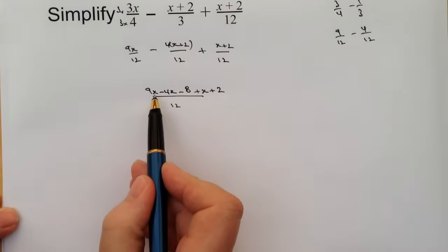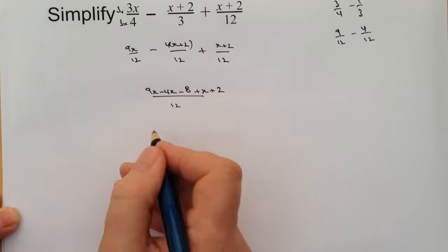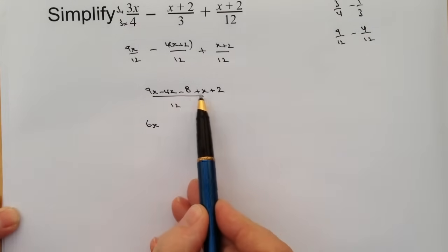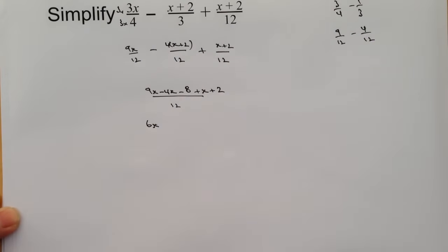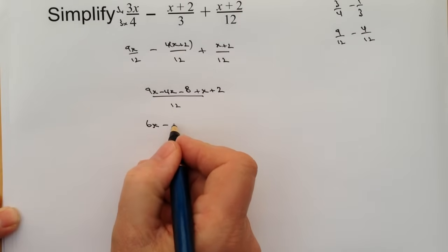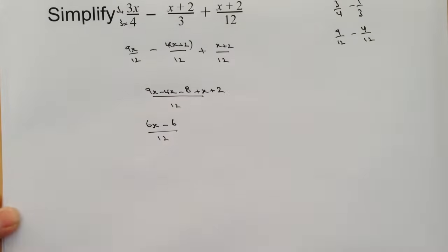You've got 9x minus 4x plus x, which is going to give you 6x, and then you've got minus 8 plus 2, which is going to give you—sorry, I beg your pardon—minus 6. That's all going to be over 12.